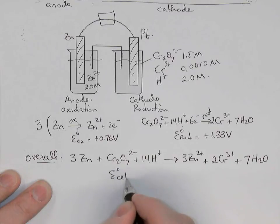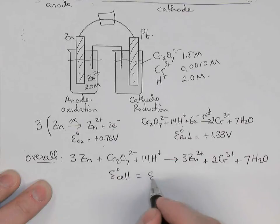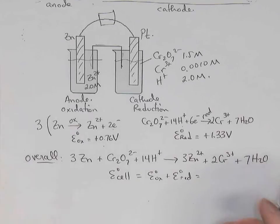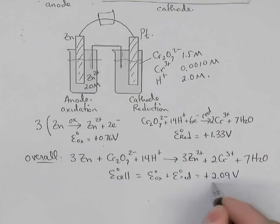The standard cell potential for this reaction will be the sum of these two potentials, which is the oxidation potential plus the reduction potential. So that's going to give me 2.09 volts, doing some mental math, positive 2.09 volts.